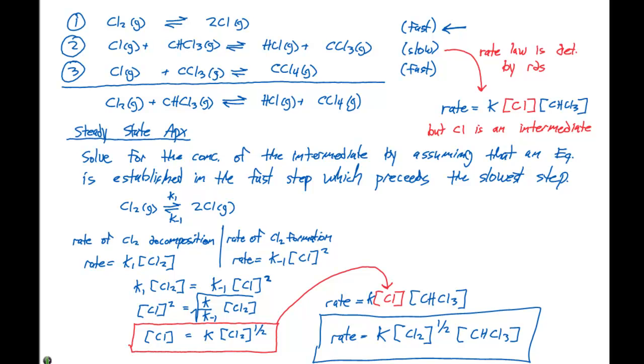And this is how we determine our rate law using our steady state approximation. And as we can see, if we go up to our overall initial equation, it contains Cl2 and CHCl3, which are expressed here in the rate law.